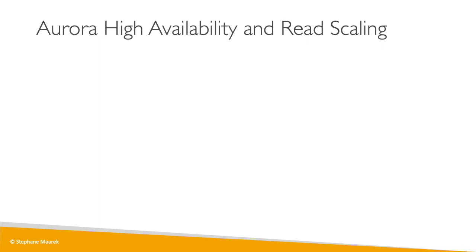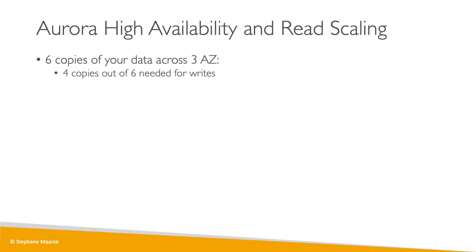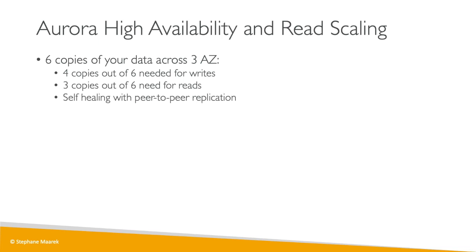Aurora is special because it stores 6 copies of your data across 3 AZs anytime you write anything. It only needs 4 copies out of 6 for writes, so if one AZ is down, you're fine. It only needs 3 copies out of 6 for reads, making it highly available for reads as well. There is also a self-healing process: if some data is corrupted or bad, it does self-healing with peer-to-peer replication in the backend. You rely on hundreds of volumes rather than just one, which greatly reduces risk.